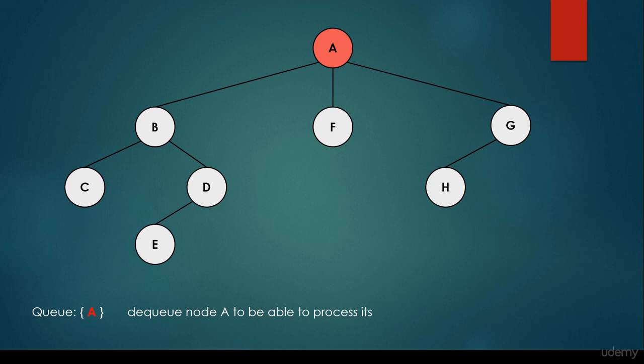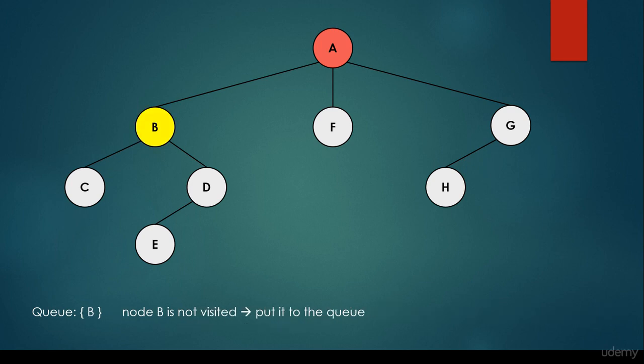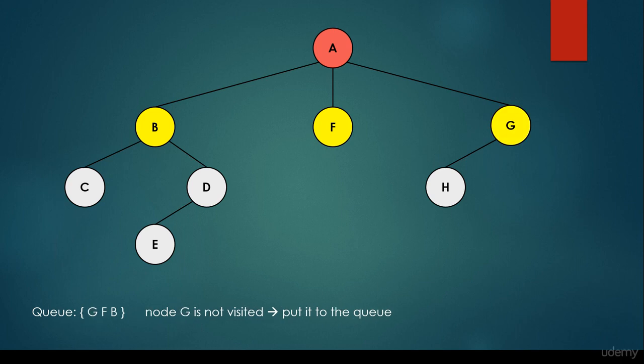Then we dequeue node A to process it, which means we visit all the neighbors of vertex A. These neighbors are B — we add it to the queue — then F, another neighbor of A — we add it to the queue — and finally G. So the queue now contains three items: G, F, and B. In a tree-like structure we sometimes call neighbors 'children'.